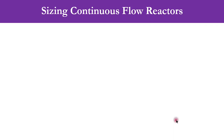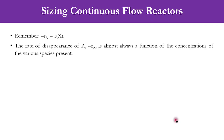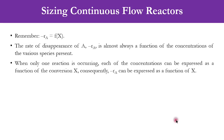Now, in sizing the continuous flow reactor, the first thing to remember is that the rate of disappearance, or the rate of reaction, is a function of conversion. We will see shortly how it is related, because we have seen that minus rA equals k times CA, but that concentration term is actually going to be a function of conversion. The rate of disappearance is almost always a function of the concentration of various species present in the system.